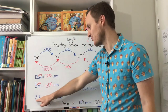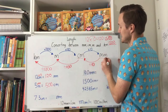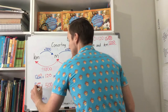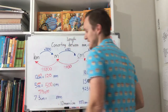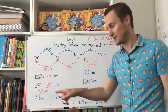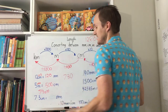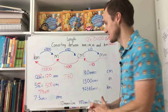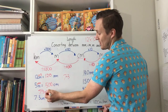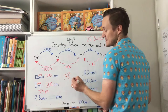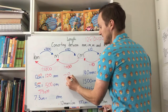Now this one's a little bit trickier — 7.3 centimetres into millimetres. We know we're going to times it by 10. So how do we do 7.3 times 10? We can't just put a zero on the end, because that wouldn't change it at all. So to make it bigger, what you're going to do is see this decimal place — you're going to move that decimal place once to the right, and it becomes 73.